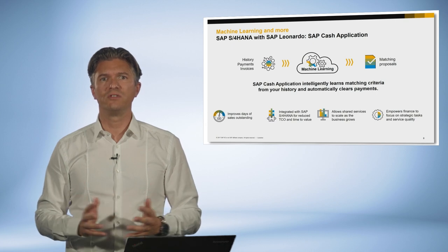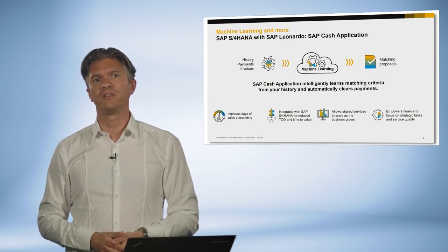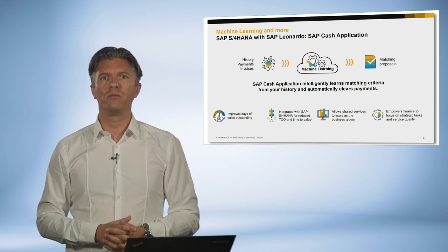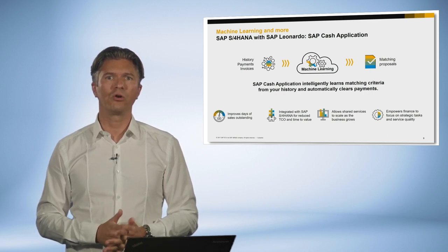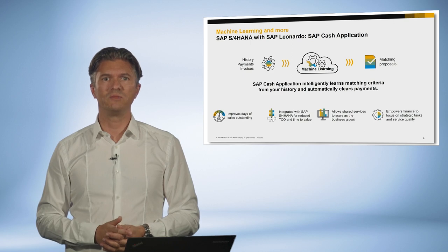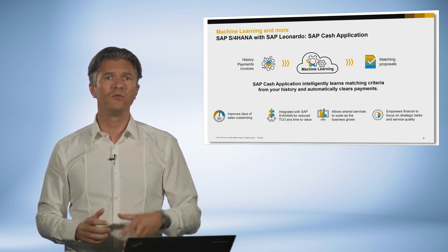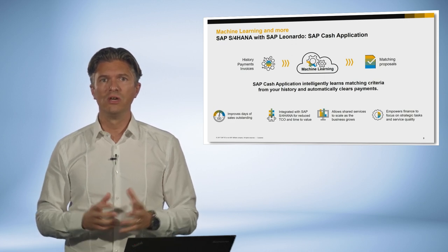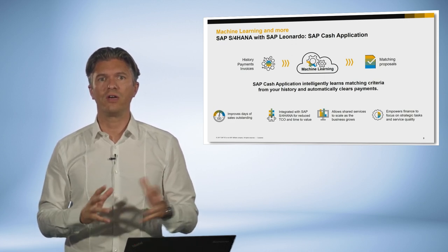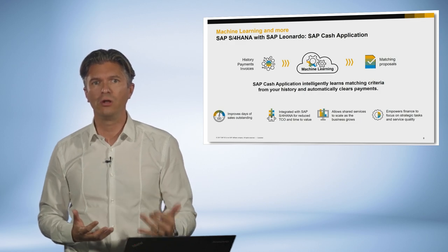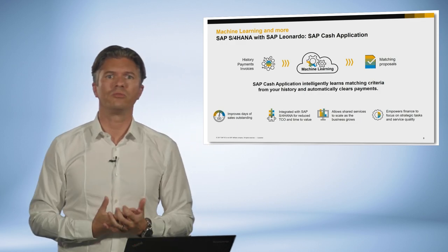At Sapphire in 2017, SAP announced Leonardo, the digital innovation system, coming with capabilities like machine learning, blockchain, and IoT. SAP S4HANA will leverage those capabilities in a substantial way. Let me give you one concrete example: SAP Cash Application, which is a cloud service that integrates with S4HANA and utilizes SAP Leonardo machine learning to automate the invoice matching process.